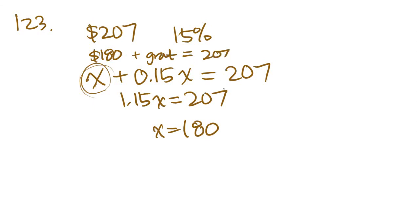But the question, don't forget, is asking us how much did each person pay? They split it evenly. The question said that there were 15 people, right? So, what we're going to do is we're going to divide 180 by 15. And that's just going to get you 12. So, each person paid $12. And $12 is answer choice B.